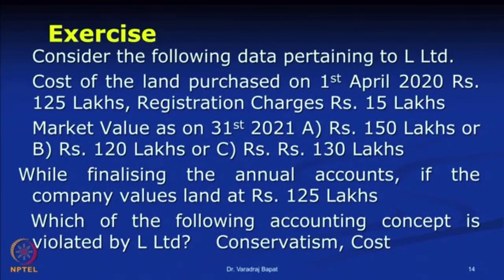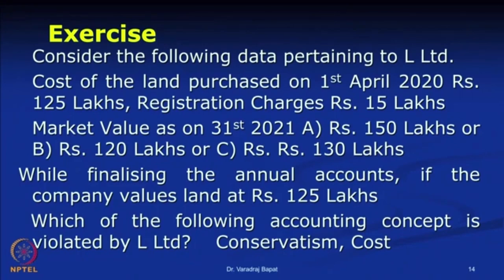Now a small exercise — consider the following data pertaining to L Limited. The cost of land purchased on 1st April 2020 is 125 lakhs and registration charges are 15 lakhs. There are three possible market values as on 31st March 2021: A — 150 lakhs, B — 120 lakhs, C — 130 lakhs. The company has considered the value of land as 125 lakhs while finalizing its annual accounts. Is it correct? Consider the correct value in each scenario and which accounting assumption is violated.